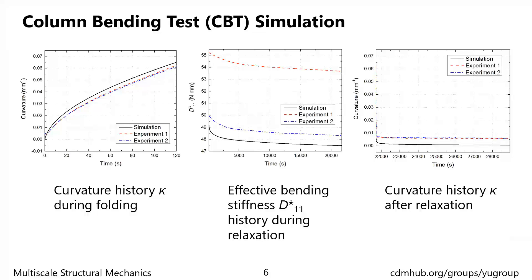Here are the results after data reduction. This plot shows the curvature during folding. We can see that the simulation follows the same trend as the experiment, and the magnitude is very close. This is the D*11 during relaxation. We can see some under-prediction, but compared with the difference between the experiments, the simulation can be considered accurate. Then we have the curvature after relaxation. Though the viscoelastic material model with direct integration implementation can predict some residual deformation, it is too small compared with the experiment. Since the difference between the simulation and the experiments is relatively constant, we believe it is caused by plasticity, which is not included in the current material model.